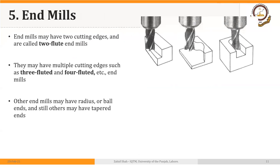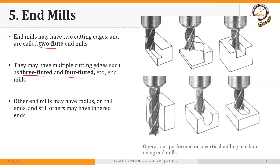Then we have end mills, very commonly used cutters. They can have two, three, or four flutes or cutting edges. They are generally used on vertical milling machines. The axis of the cutter and the surface being cut make this basically an example of face milling, and they can cut on the side, on the end of the cutter, or both. You can see these cutters in action in the video provided in the description.